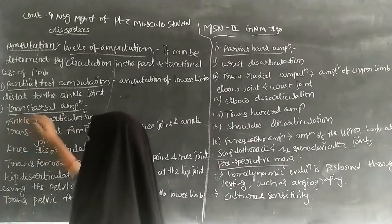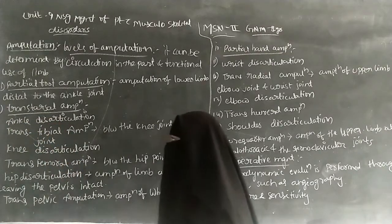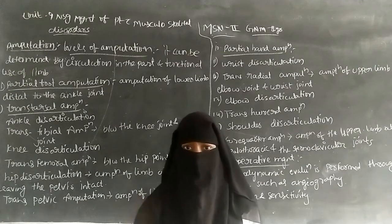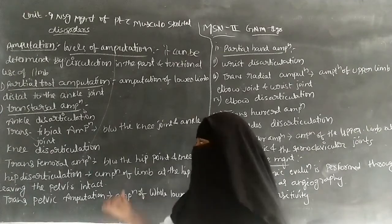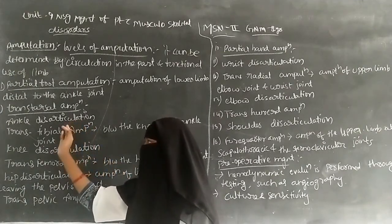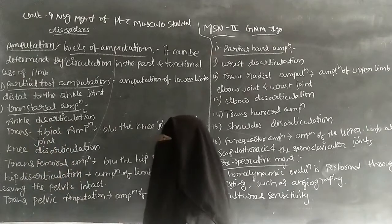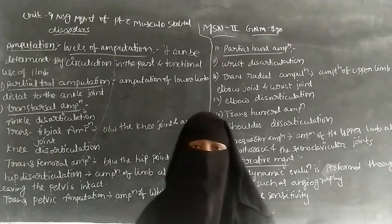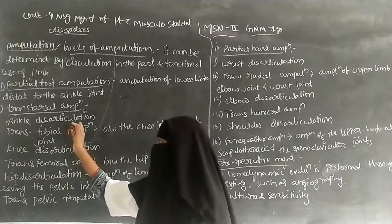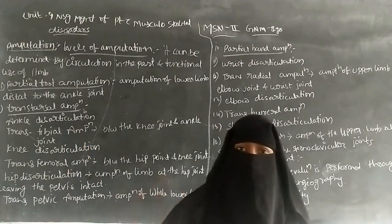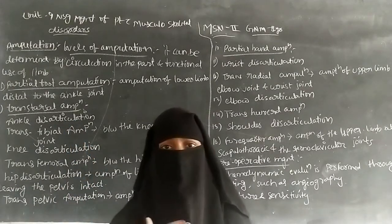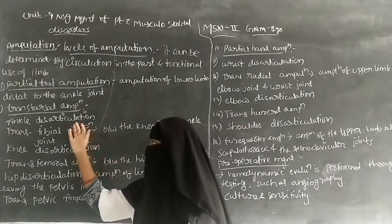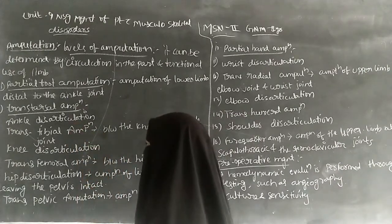The next level is ankle disarticulation. Ankle disarticulation means up to the ankle joint, the total foot is removed by the amputation. From the ankle joint, the total foot has to be removed in ankle disarticulation.